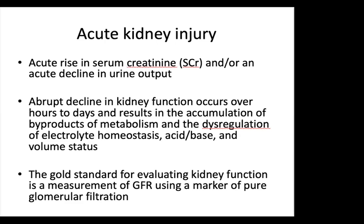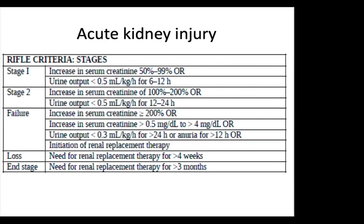Acute kidney injury (AKI) is an acute rise in serum creatinine and/or an acute decline in urine output, occurring over hours to days, resulting in accumulation of metabolic byproducts and dysregulation of electrolyte homeostasis, acid-base, and volume status. The gold standard for evaluating kidney function is GFR measurement using CKD-EPI. The RIFLE criteria divides AKI into stages based on severity and duration (Risk, Injury, Failure, Loss of kidney function, ESRD). The KDIGO criteria include an acute rise in serum creatinine greater than 0.3 mg/dL within 48 hours, a rise of at least 1.5 times baseline within 7 days, or urine volume below 0.5 mL/kg/hour for 6 consecutive hours; unlike RIFLE, KDIGO does not include scoring for prolonged kidney failure or ESRD.